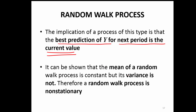It can be shown that the mean of a random walk process is constant, but the variance is not. Mean of the random walk in many situations can be constant, but variance is never the case. That is why random walk is a typical case of a non-stationary series. But many non-stationary series can be made stationary and you can do forecasting, except in the random walk process — that is where the difficulty is.